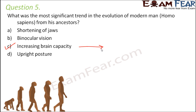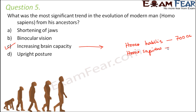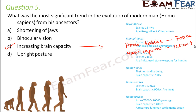If you look at the ancestors of homo sapiens, homo habilis was the first form of man ancestors for the modern day man. The brain capacity of homo habilis was around 700 cc, whereas the brain capacity of homo sapiens is more than 1600 cc. So there is a huge increase in brain capacity. On the right hand side, I have drafted the various stages of evolution of man, and you can also see how the brain capacity changed with each stage.